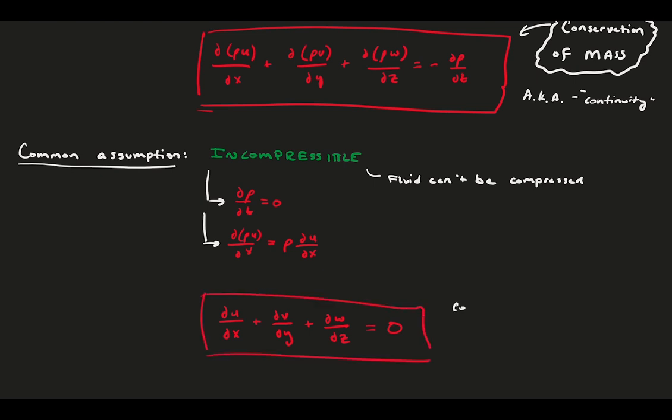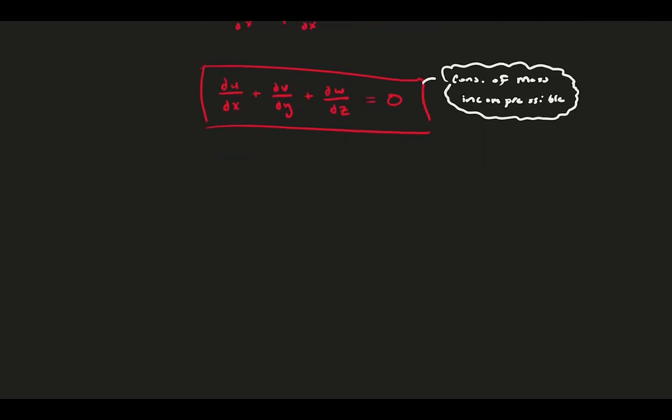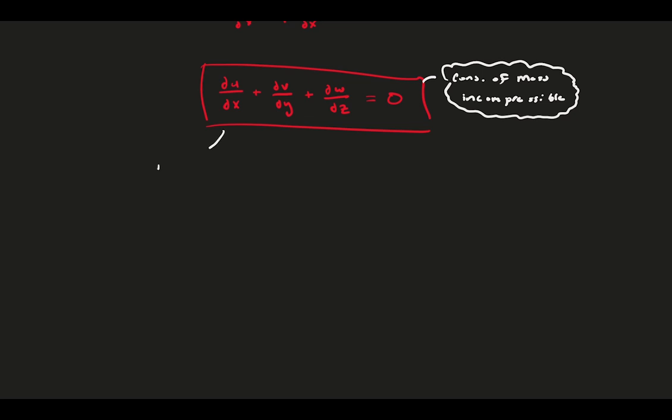Applying this assumption to the above conservation of mass equation gives us the incompressible version of the fluid conservation of mass. You'll notice that the density is entirely gone. It can't change anyway, so it falls out. What we're left with is a balance of velocity-spatial derivatives. These derivatives represent the mass in versus mass out in all three directions in x, y, and z.